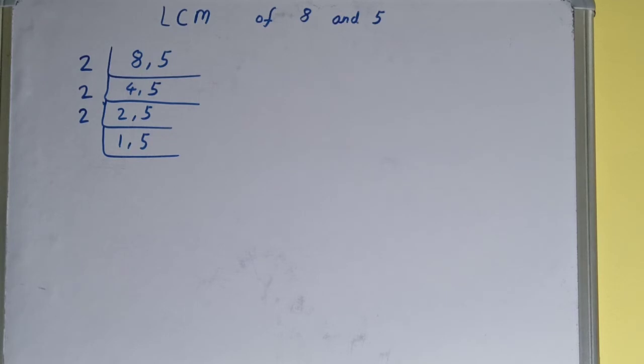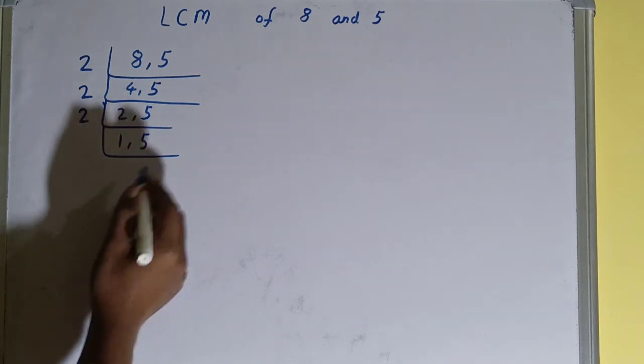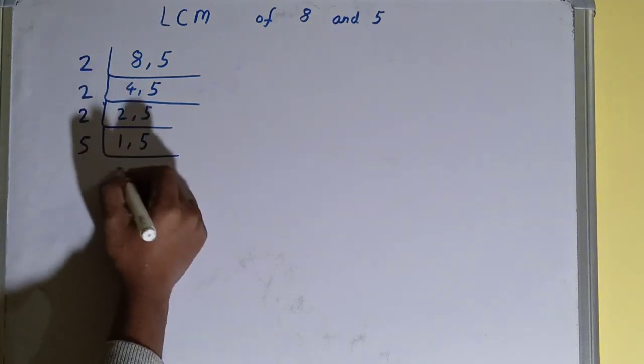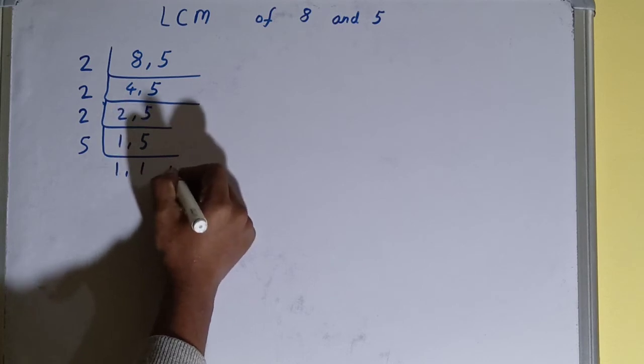So we'll go to the next prime number, that is 5, and this is divisible by 5. So we'll divide and we'll be left with 1 comma 1. Once we are left with 1 comma 1, we need to stop and do one last thing.